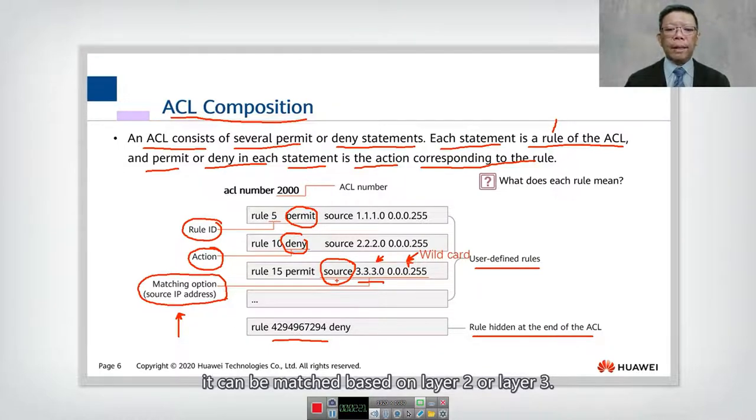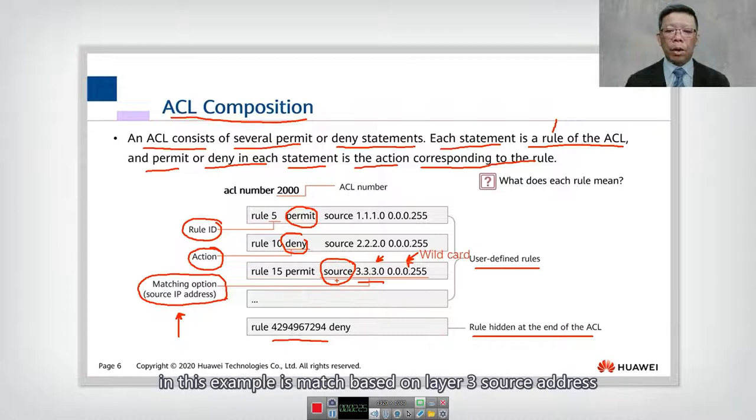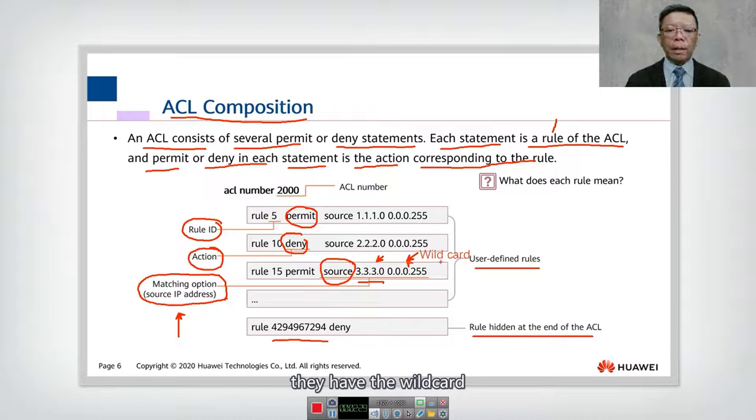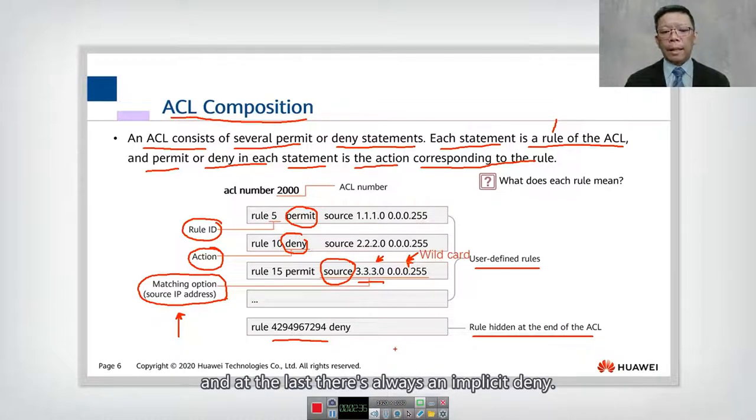It can be matched based on layer 2 or layer 3. In this example, it's matched based on layer 3 source address. They have the wild card. Wild card is like a subnet mask, but it's a reverse. I will explain this later part. And at the last, there is always an implicit denying.